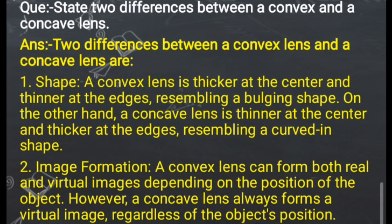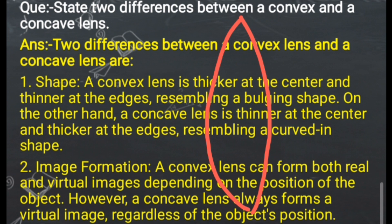This question is: state two differences between a convex and a concave lens. To write two differences between convex and concave lens, first describe the actual shape and appearance of each. The first difference is shape. The convex lens is thicker at the center and thinner at the edges. So convex lens is drawn like this — thicker at the center and thinner at the edges.